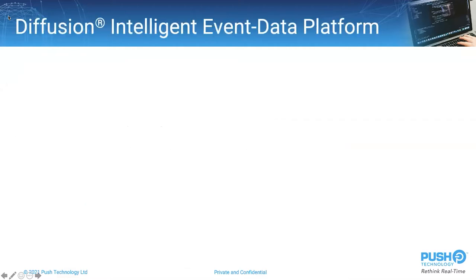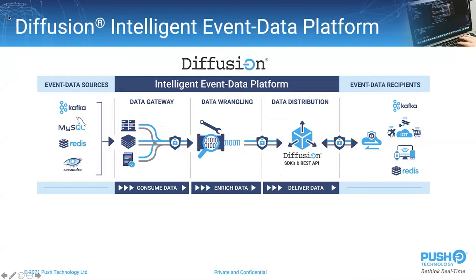So a quick introduction to Diffusion. Diffusion provides three core functional pillars. There is the Data Gateway API, which allows data from any source to be published into Diffusion in a real-time, high-performance, consistent fashion. Data is published in a structured model called a topic tree that allows granular control over who can access what data.